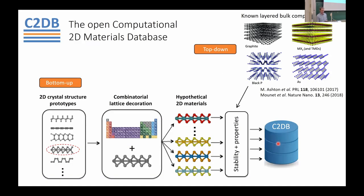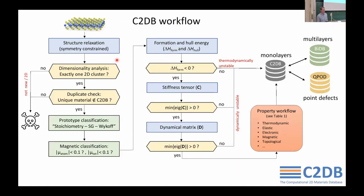Coming back to the C2DB: we have a property workflow written in ASR. It starts with some kind of 2D structure, which we relax. Once it's relaxed, we check whether it's still a 2D material, because during relaxation the material can break up and become something other than a covalently bonded 2D structure. We check whether it's a unique structure or whether it's already in the C2DB, then do symmetry classification and check whether it's magnetic. We calculate the formation energy and the energy above the convex hull.